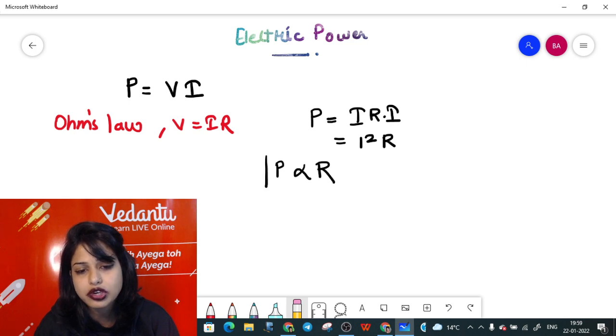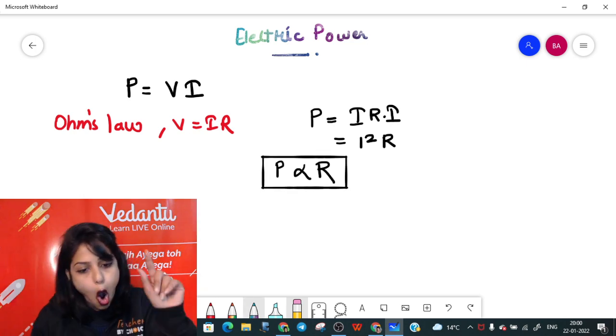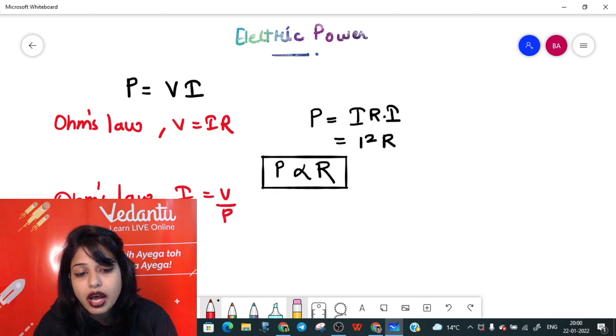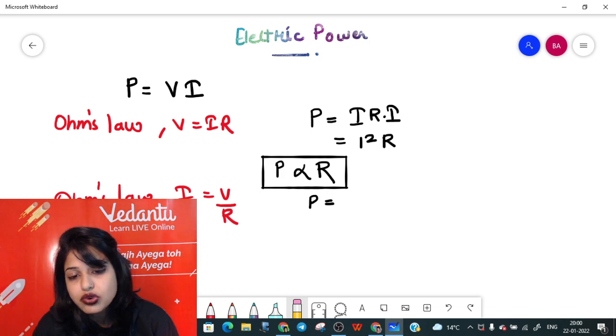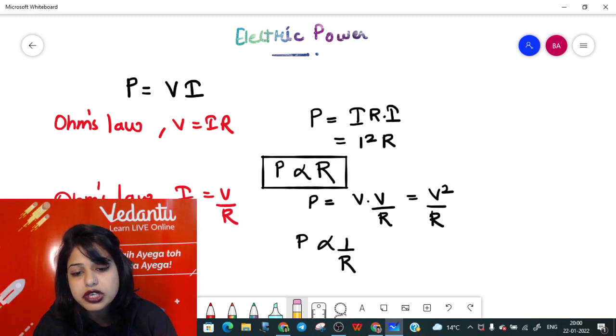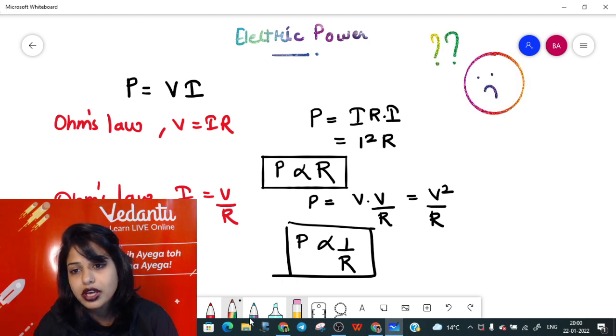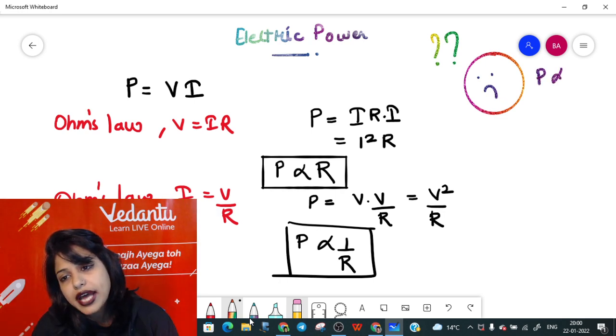On the other hand, if I put the Ohm's law as I is equals to V upon R, your power should come out to be V into I, which becomes V into V upon R, which is V square upon R, giving me power as inversely proportional to R. So the query is, question mark, big question mark: what is it? Is power directly proportional to R, or is power inversely proportional to R?